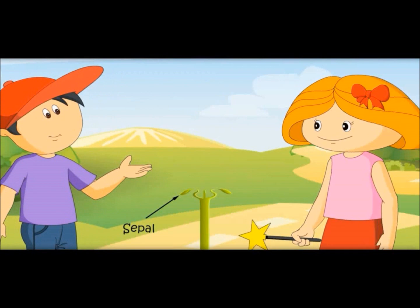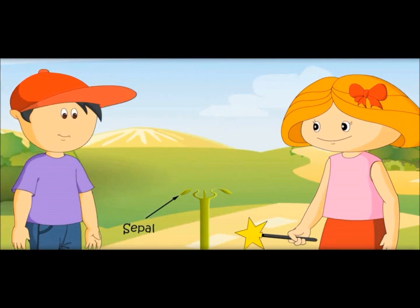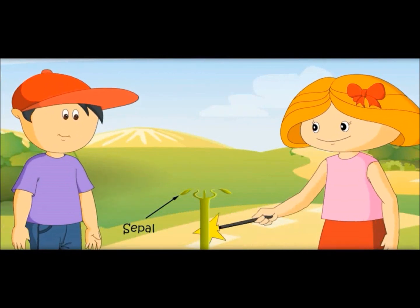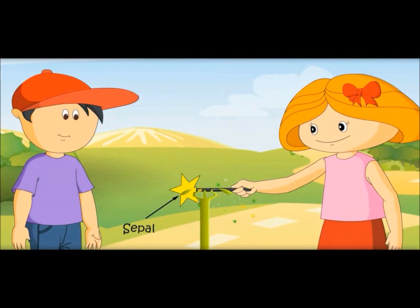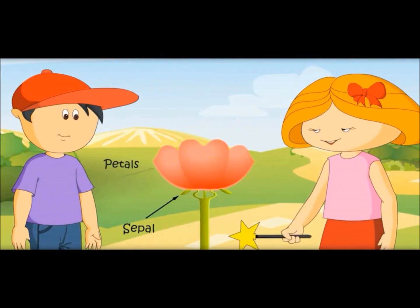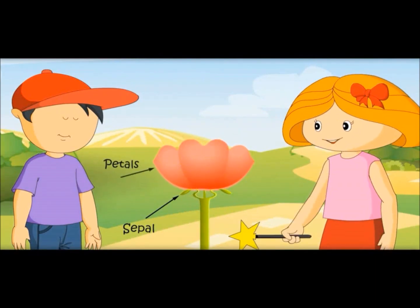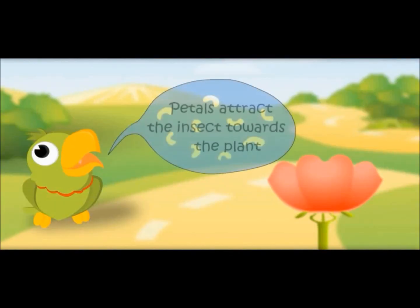Now bring petals — the most beautiful part of the flower. Aren't they attractive? Yes, they are. They attract insects towards the plant. Petals attract insects towards a plant.